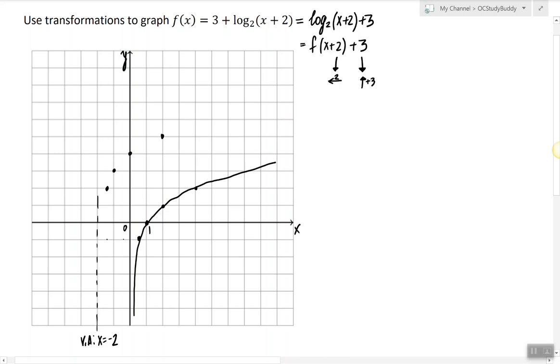Every point that I have is shifted now 2 units to the left and 3 units up. So this is what the graph of this logarithmic function looks like after all the linear transformations are applied.